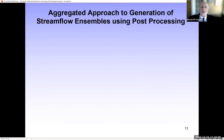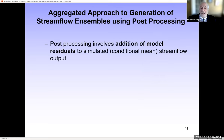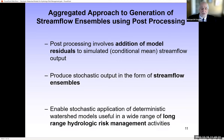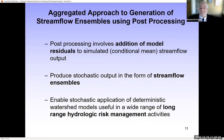How are we going to do this? We're going to use an aggregated approach to the generation of streamflow ensembles using post-processing. Post-processing involves the reintroduction of the residuals that were used to calibrate the model — adding them back to the conditional mean streamflow output. That can be done over and over to generate ensembles, and those ensembles can then be used for risk-based planning in a wide range of activities.